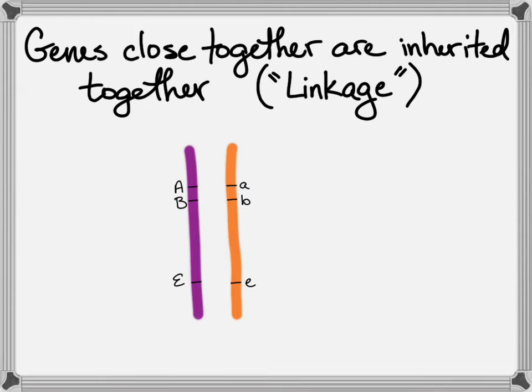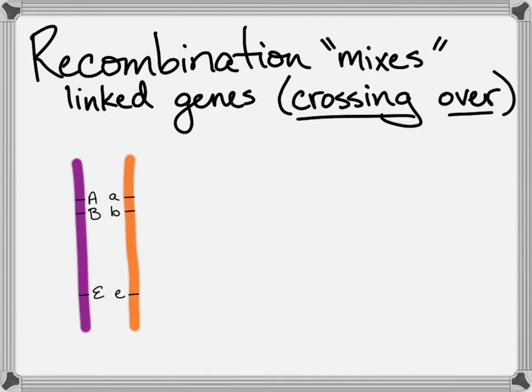So why is that? Well, it's because of this process known as crossing over, which is going to mix up genes that are on the same chromosome. This happens during meiosis I.